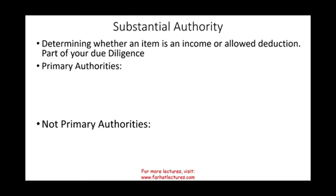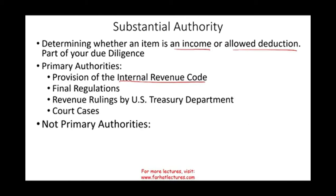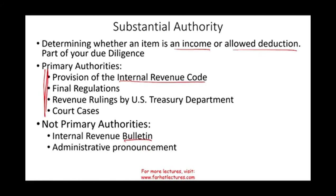Substantial authority refers to what you rely on to determine whether something is income to be included or a deduction to be taken. Primary authorities include provisions of the Internal Revenue Code, final IRS regulations, revenue rulings by the US Treasury Department, and court cases. Non-primary authorities include the Internal Revenue Bulletin, administrative pronouncements, and press releases.